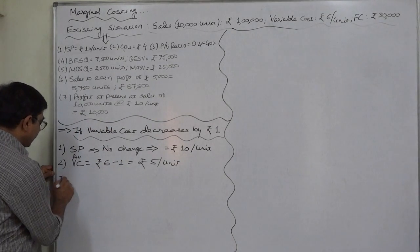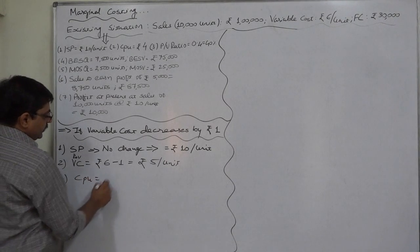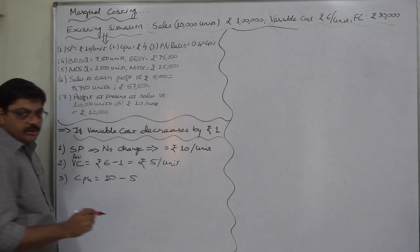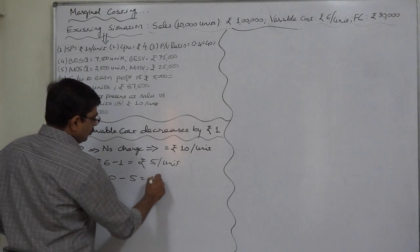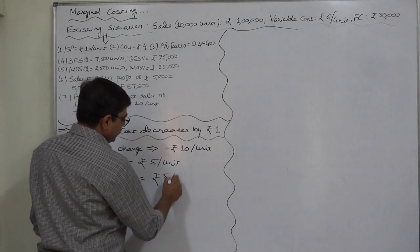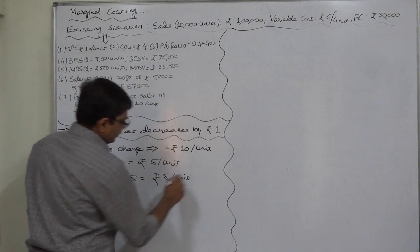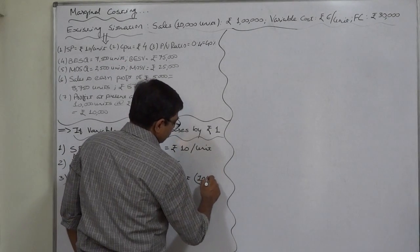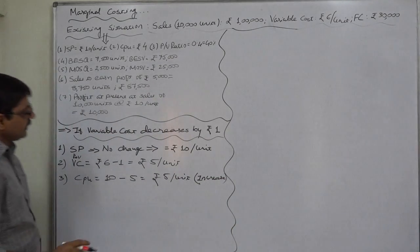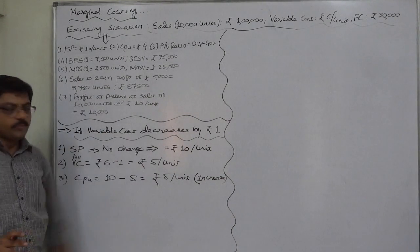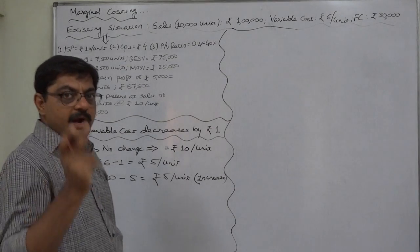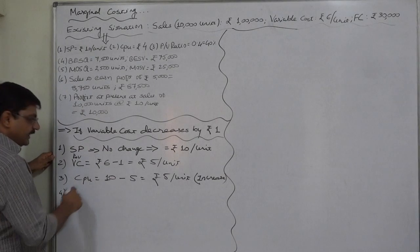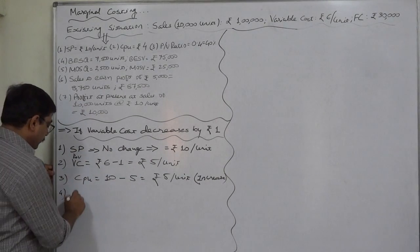The first effect is on contribution per unit. Existing selling price of rupees 10 minus the revised variable cost of rupees 5 gives contribution of rupees 5 per unit, up from rupees 4 in the existing situation. This is a considerable increase — an increase of rupee 1, that is 25 percent — which will directly create a positive effect on PV ratio.